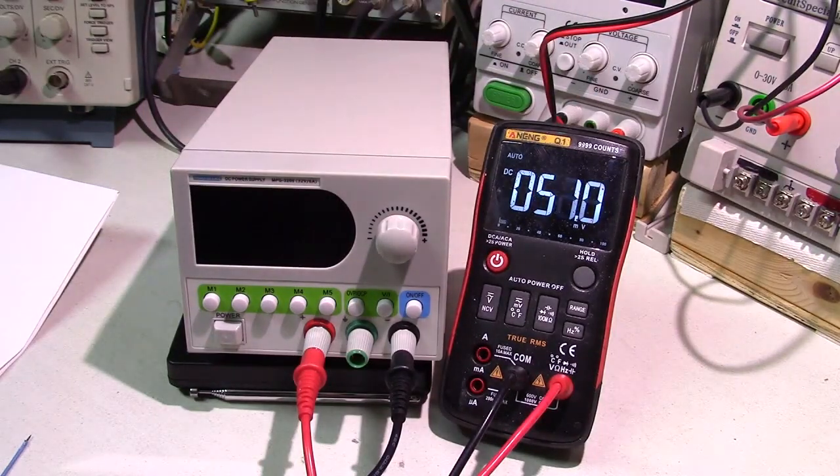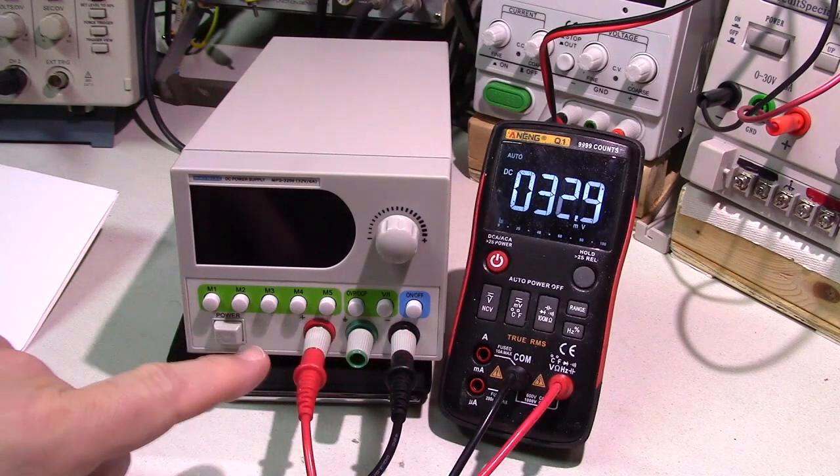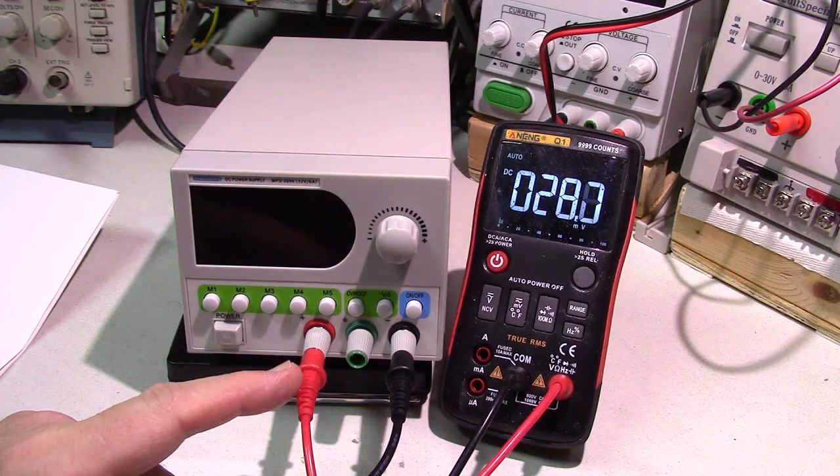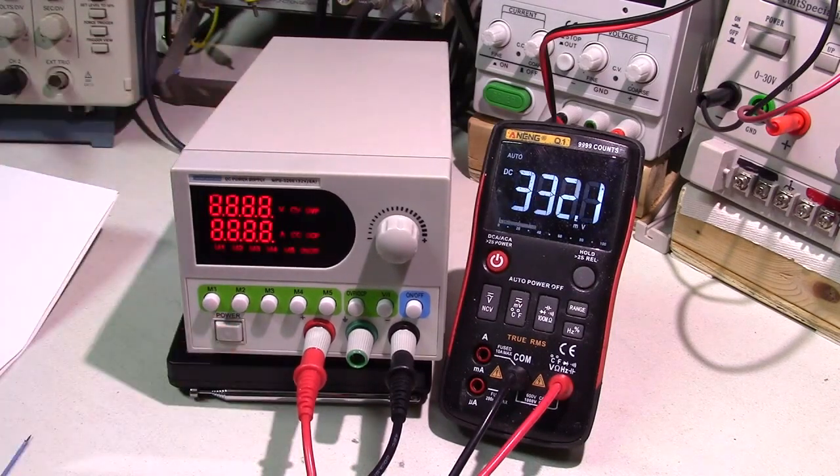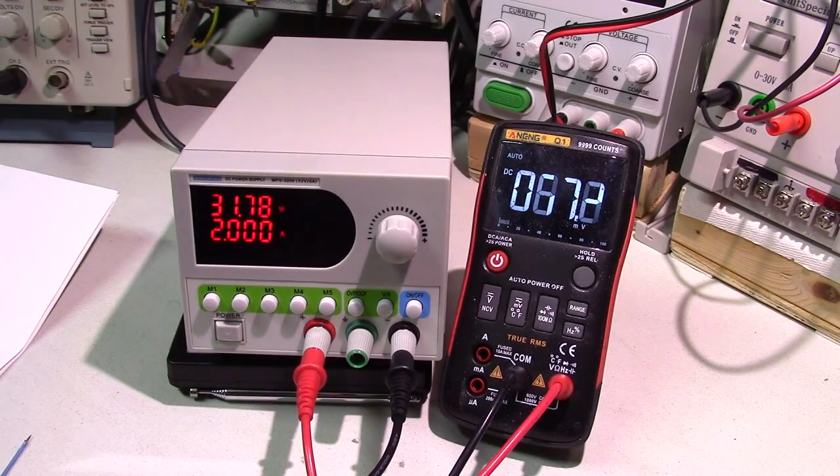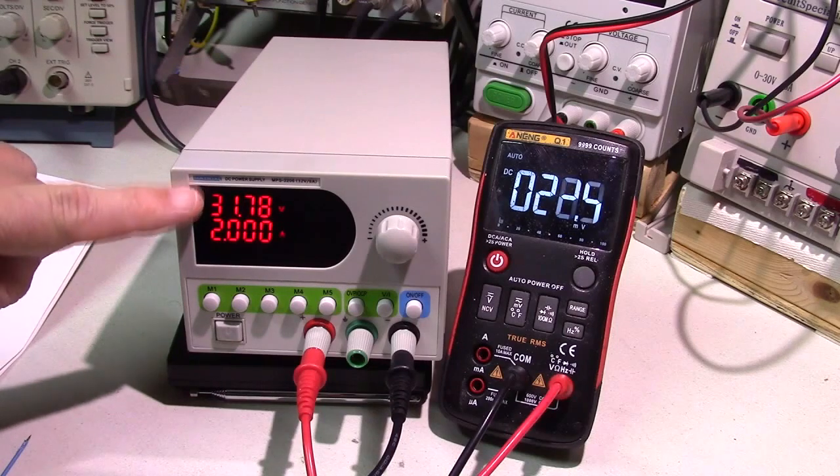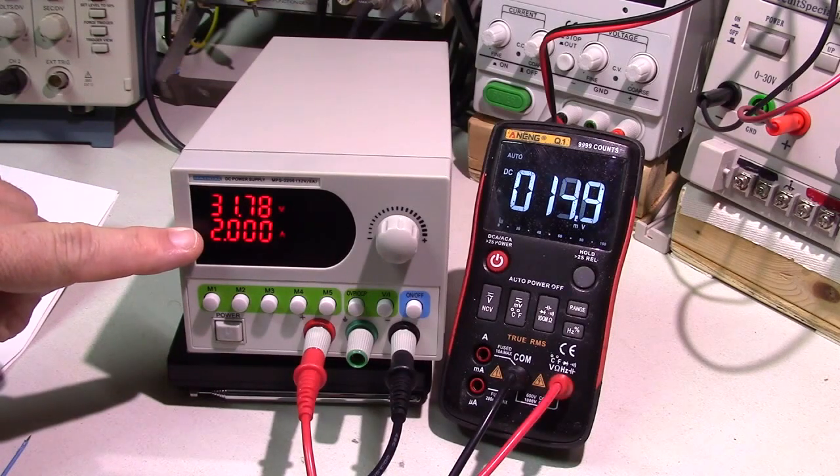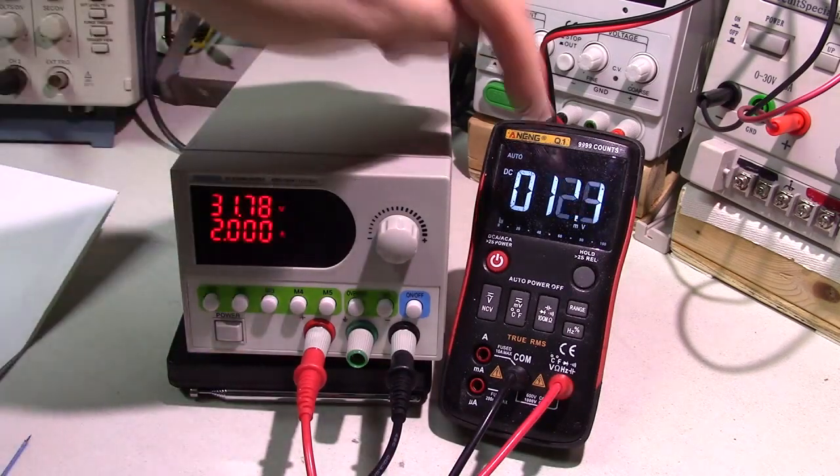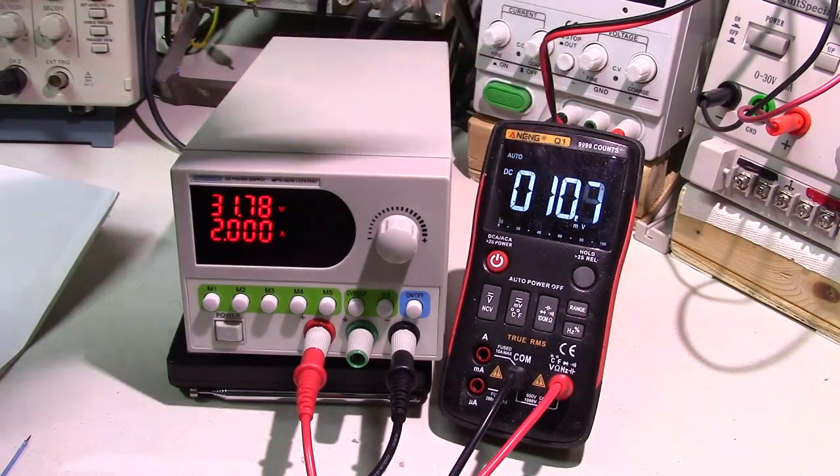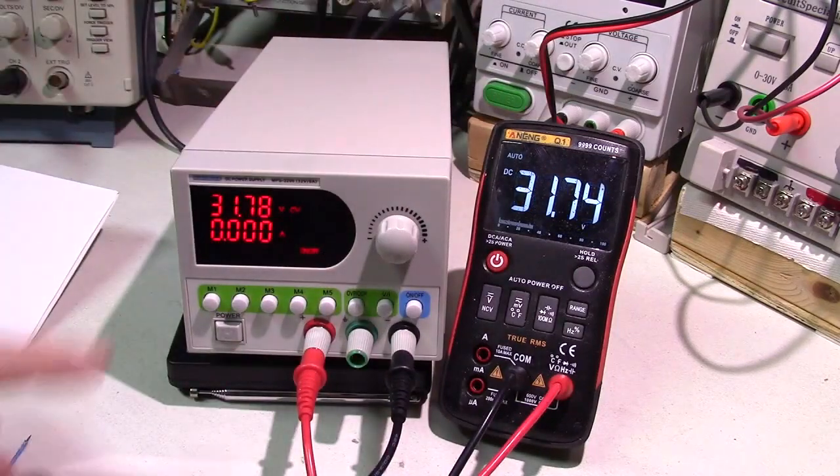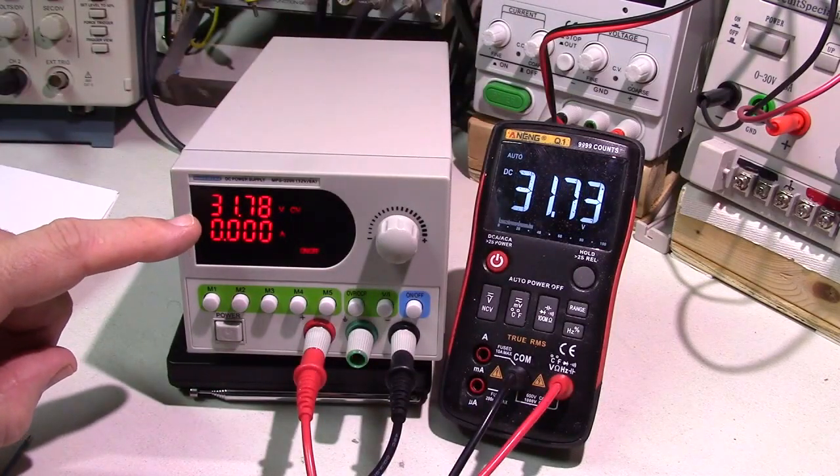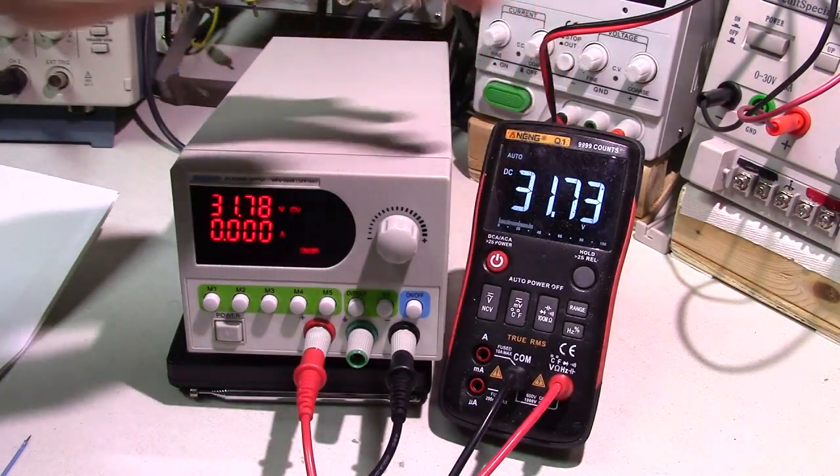Here I have a multimeter connected to the output terminals of the Matrix MPS-3206. We're going to turn this power supply on, and you see it's got the voltage and current displayed. You notice there's no output—it's just wandering around because I didn't hit the output button.